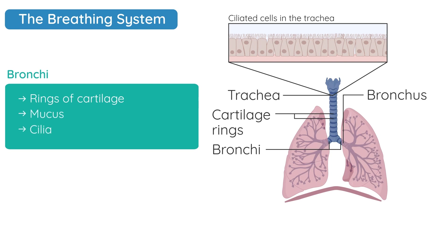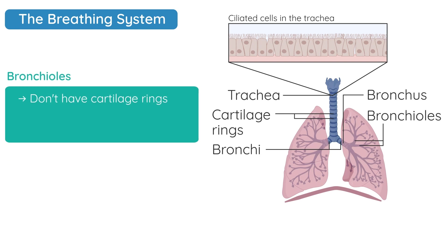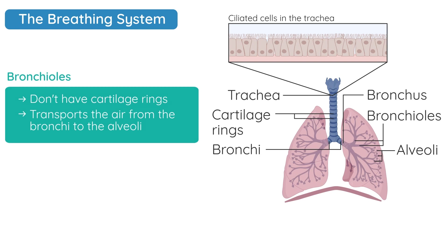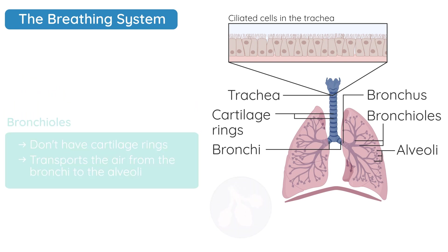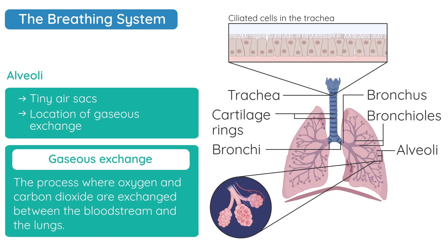The bronchi break up into smaller branches called bronchioles. They don't have cartilage rings and they transport air from the bronchi to the alveoli. The alveoli are tiny air sacs and this is where gaseous exchange happens — where oxygen and carbon dioxide are exchanged between the air and our bloodstream.